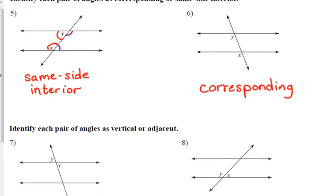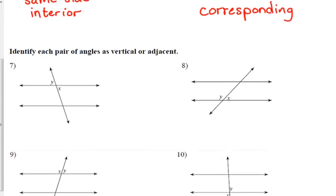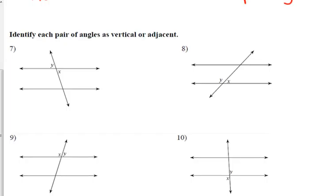Another term that we need to be familiar with are vertical and adjacent angles. Vertical means that they are across from each other when two lines intersect. So number seven is an example of vertical angles. And number ten is an example of vertical angles.